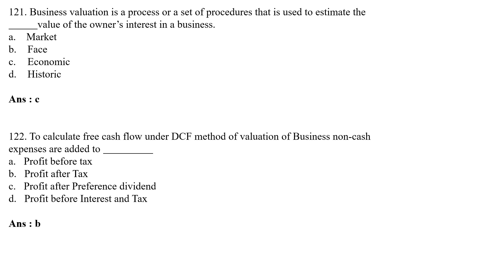To calculate free cash flow under the DCF (Discounted Cash Flow) method of valuation of business, non-cash expenses are added to — Option A: profit before tax; Option B: profit after tax; Option C: profit after preference dividend; Option D: profit before interest and tax. The correct answer is Option B — profit after tax. Non-cash expenses are added to profit after tax.